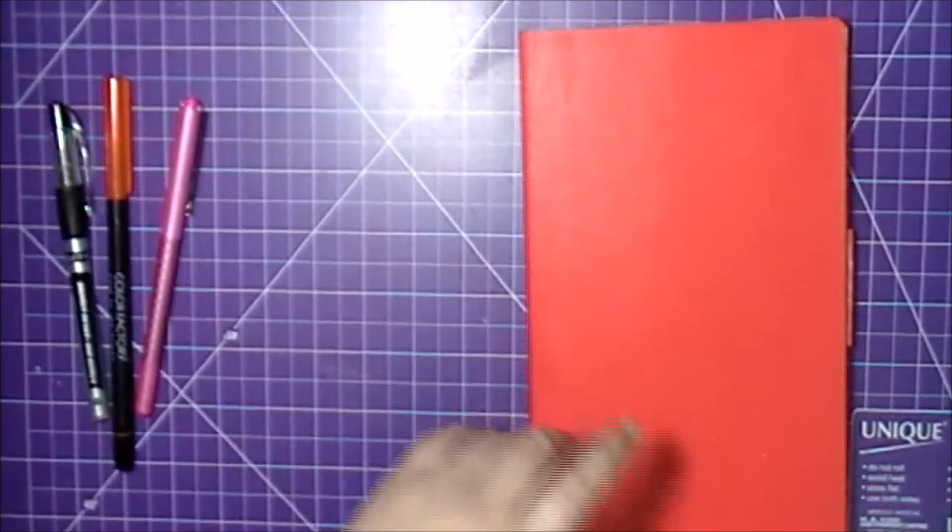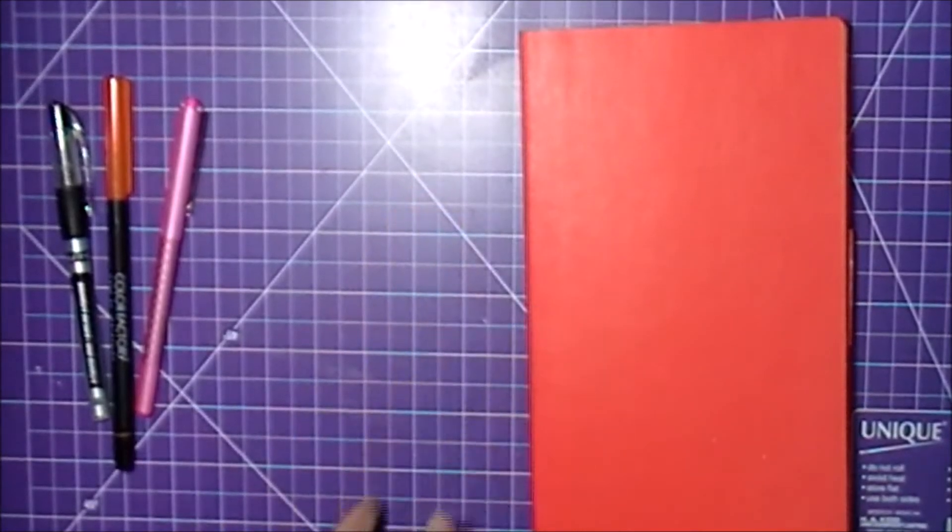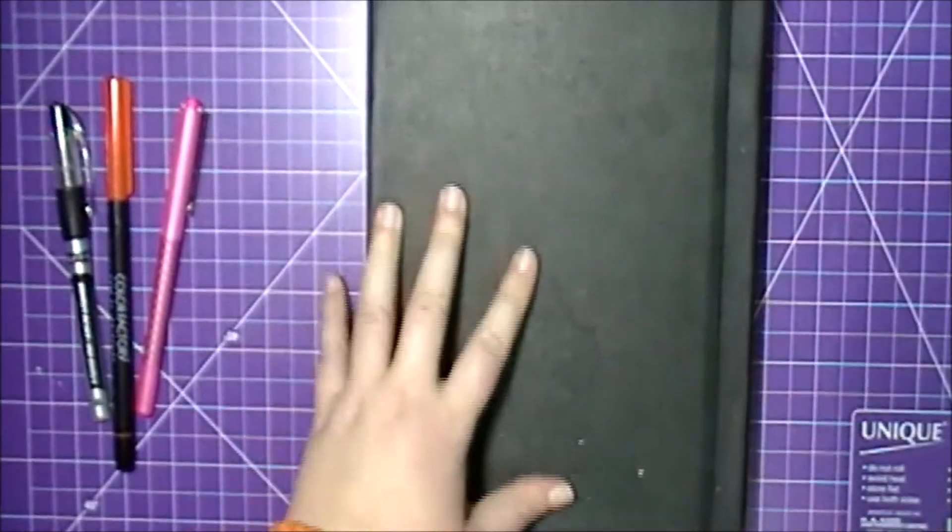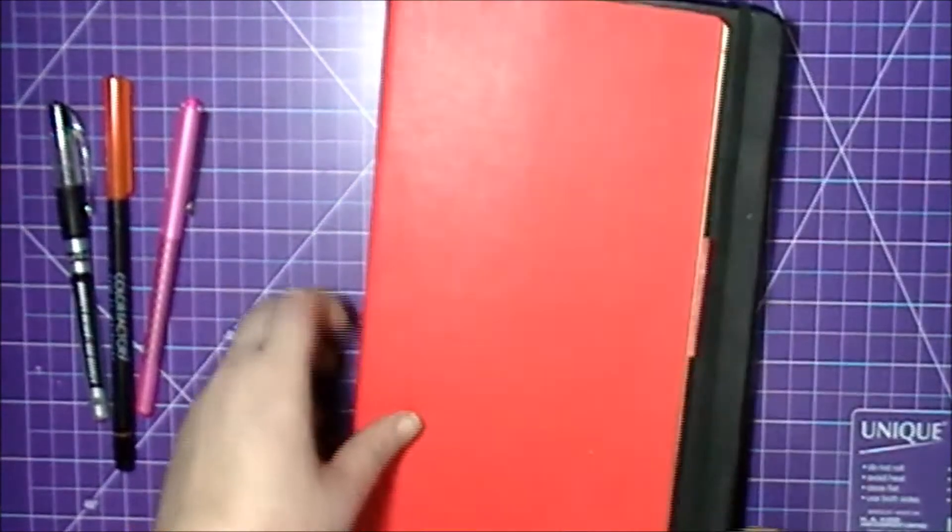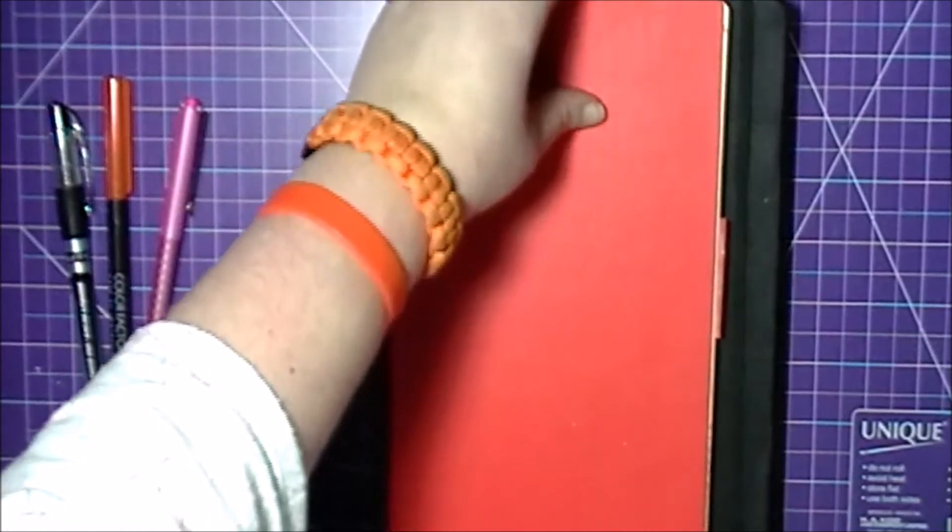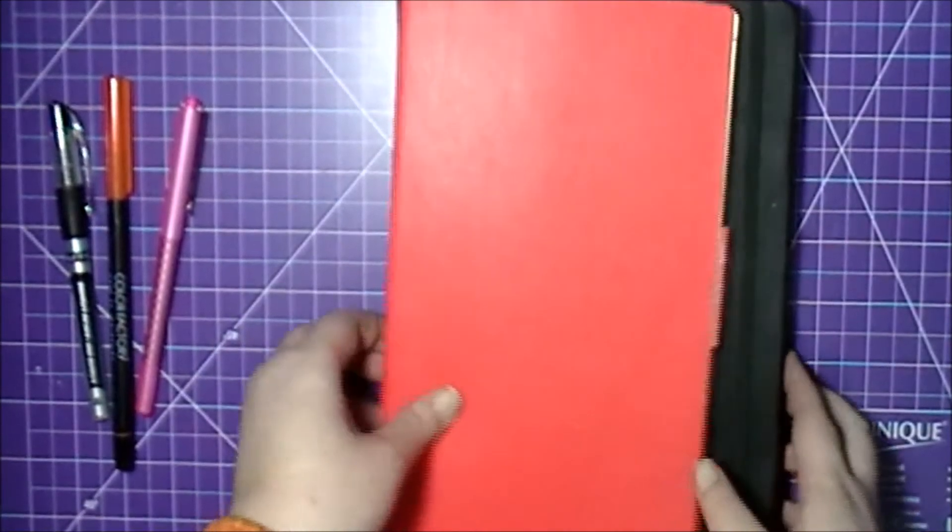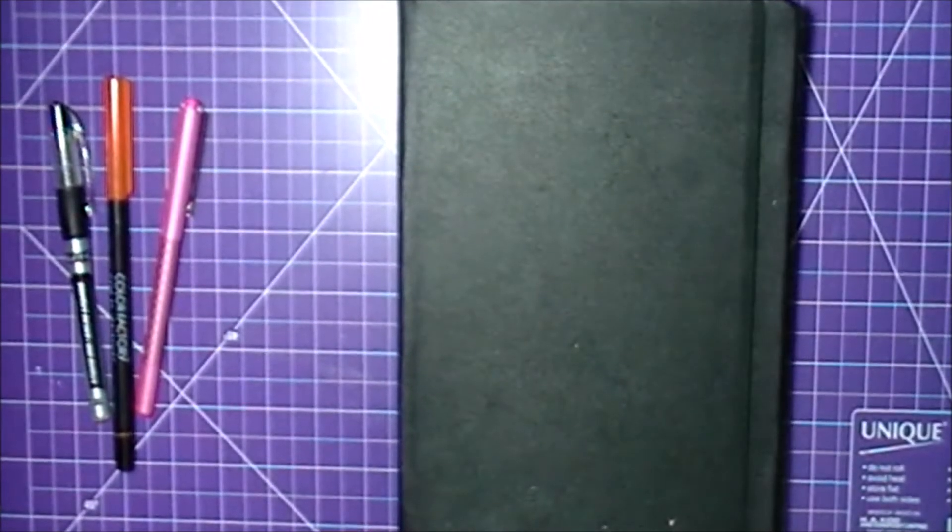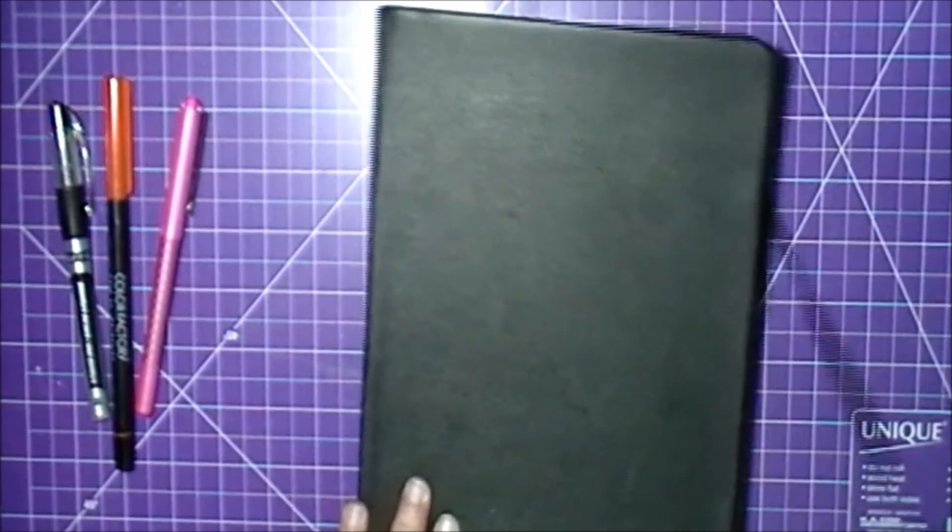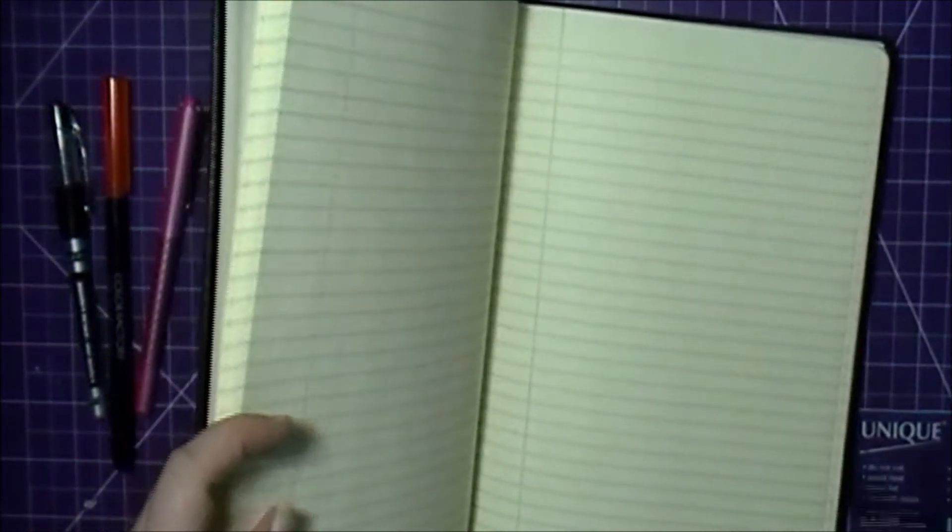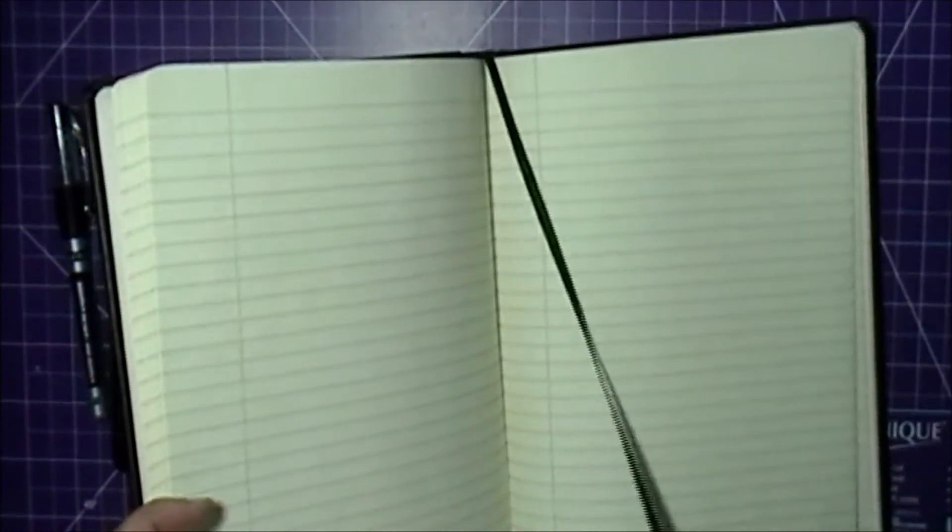The next journal I'll be using for my bullet journal is this one that I got at Walmart. It's the same height but it's wider. I like that it has an elastic closure and it also has a little page mark.